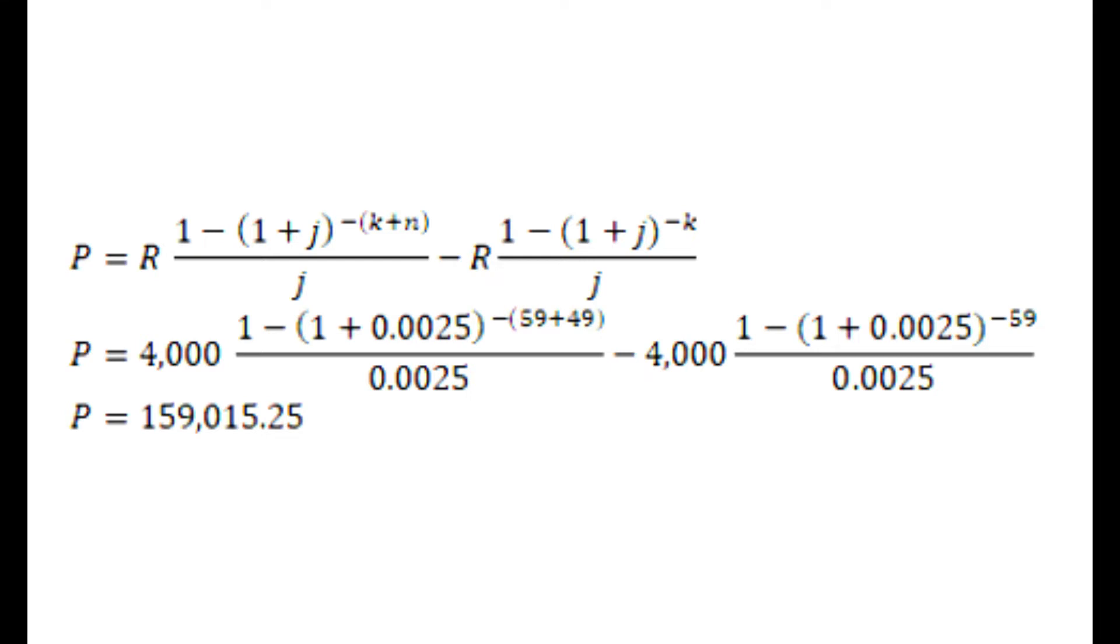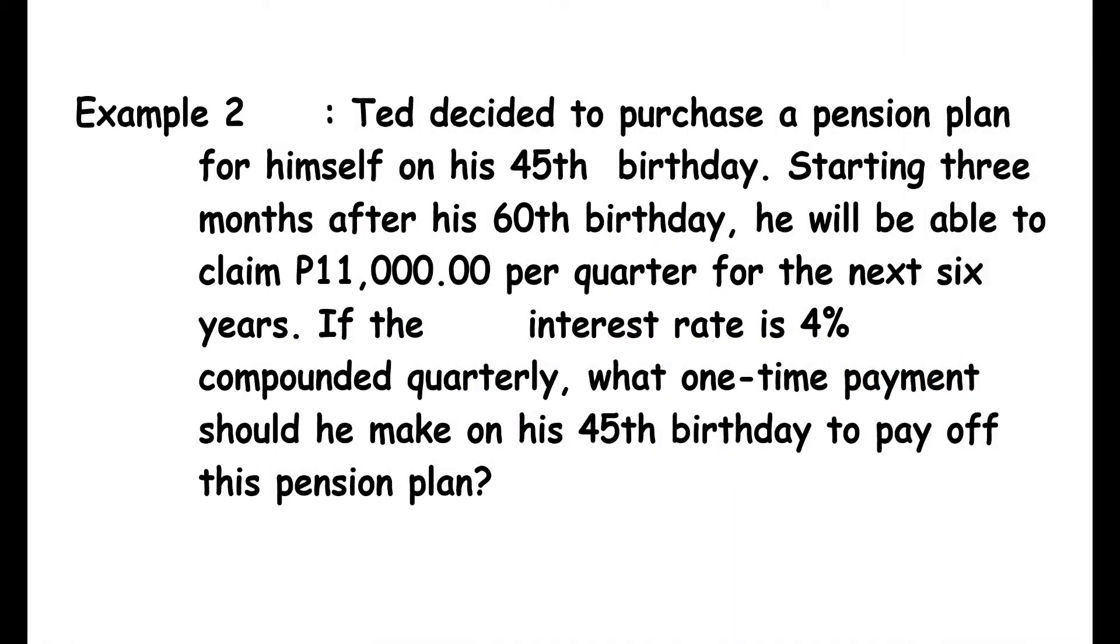Example 2. Ted decided to purchase a pension plan for himself on his 45th birthday. Starting three months after his 60th birthday, he will be able to claim 11,000 pesos per quarter for the next six years. If the interest rate is 4% compounded quarterly, what one-time payment should he make on his 45th birthday to pay off this pension plan?